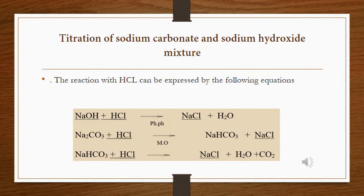When using HCl with the NaOH and Na2CO3 mixture, we need two indicators. The indicator shows a physical change — a color change — at the equivalence point between NaOH and HCl, and between Na2CO3 and HCl. So there should be two indicators corresponding to two endpoints.